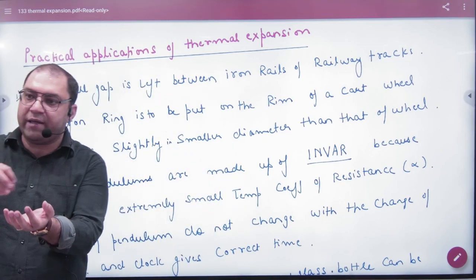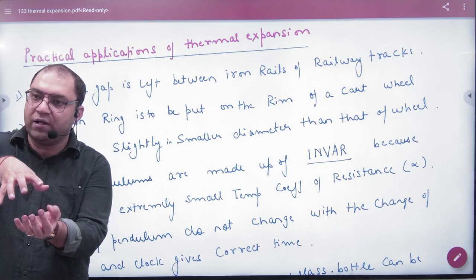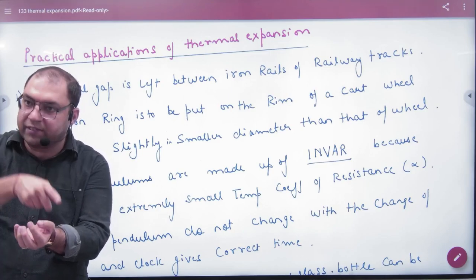Another application: if we put an iron ring on the rim of a cart wheel, we heat it first. It will expand, then we fit it on, and when it cools it becomes tight.